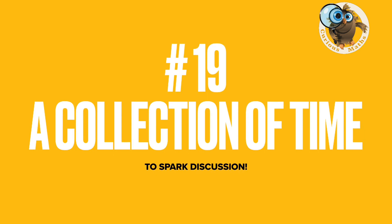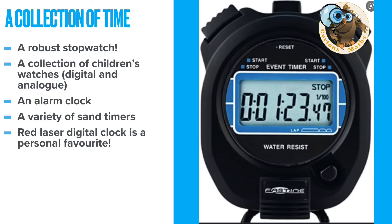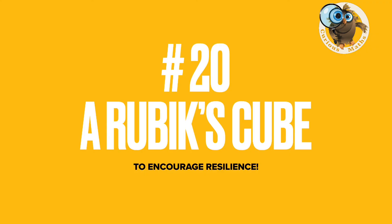Number nineteen: a collection of timing tools. I recommend a robust stopwatch — great for timing how long it takes children to get ready for PE, line up for assembly, or recite their seven times table, and good for science experiments. Over the years I collected about six children's watches and let children wear them throughout the year, always asking what the time was. I'd also use an alarm clock, letting it go off during the day when teaching time. Sand timers are a great visual display of time, and if I were back in the classroom now I'd buy a red laser digital clock — they're amazing.